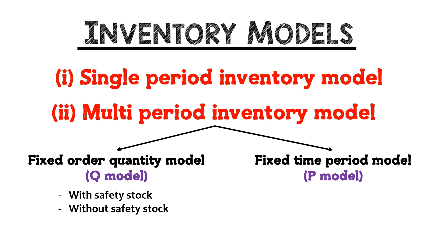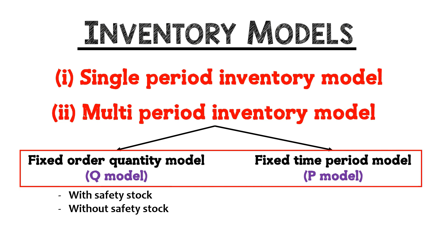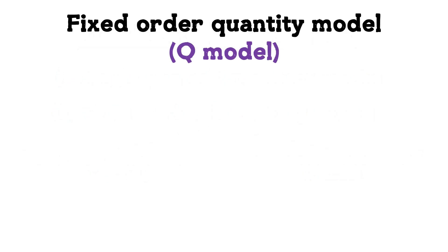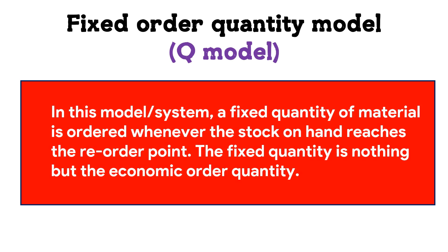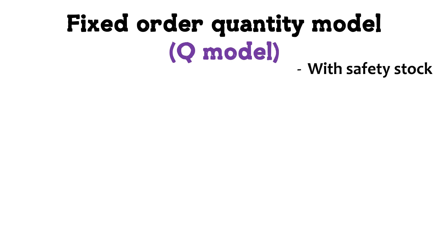In this video we will be covering the fixed order quantity model (Q model) and the fixed time period model (P model). In the Q model, a fixed quantity of material is ordered whenever the stock on hand reaches the reorder point. The fixed quantity is the economic order quantity — that is, how much to order.